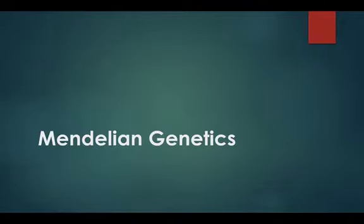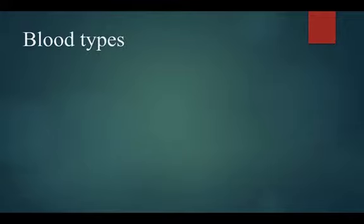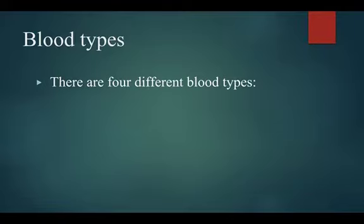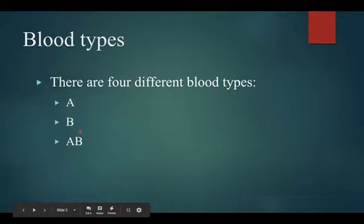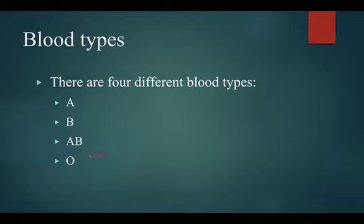We're still on Mendelian genetics. Now we're starting with blood types — blood types and who can donate to who, who can receive from who. There are four different blood types: A, B, AB, and O. Those are the only four options.